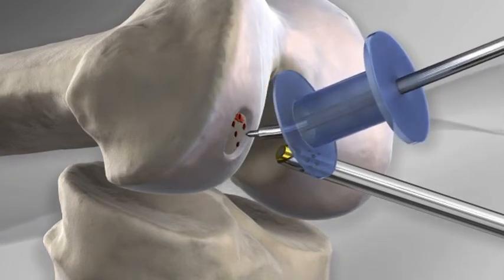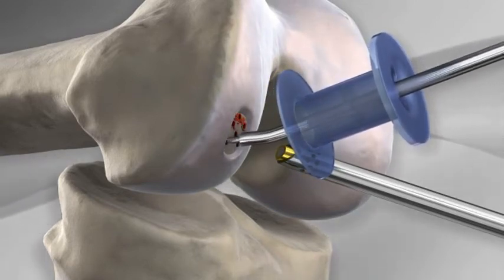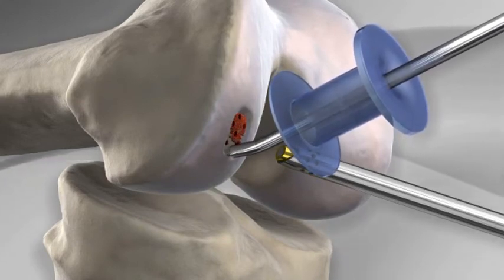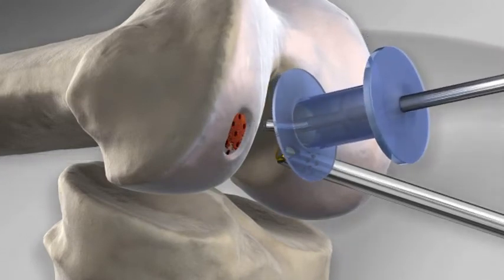The blood forms a clot over the area of injured articular cartilage and this clot is slowly converted to a different form of cartilage covering the defect.